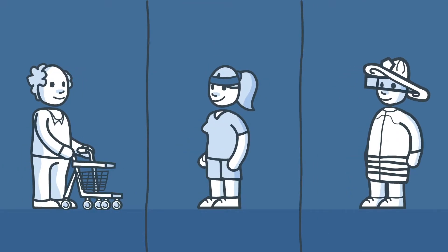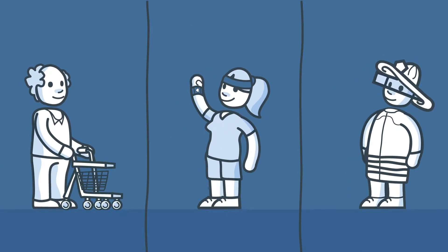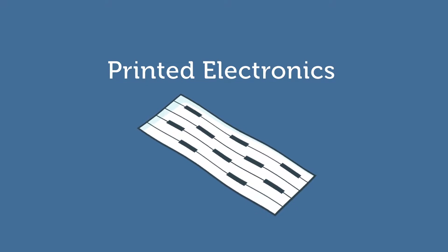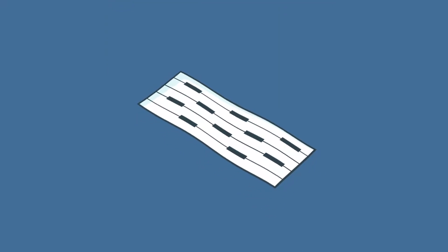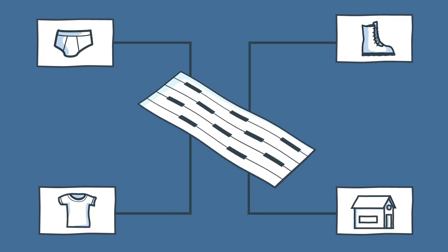Thanks to printed electronics, the future of smart living is awesome. Printed electronics allow us to print electronics on anything in layers thinner than paper. This way it can be integrated in anything we wear and live in.